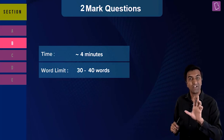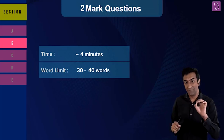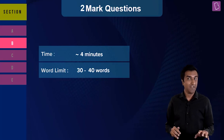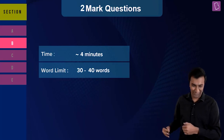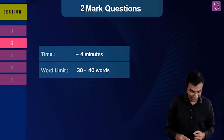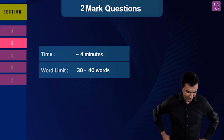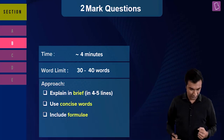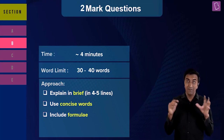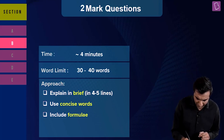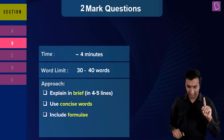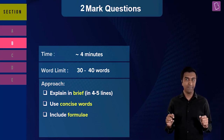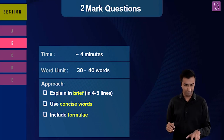These ideas are mainly for you to know while you're preparing. If you're seeing this video one day before the exam, skip over to the next parts. The word limit for two-mark questions is 30 to 40 words — you need to explain in brief, about four to five lines. Use precise, concise words and formulae if needed.